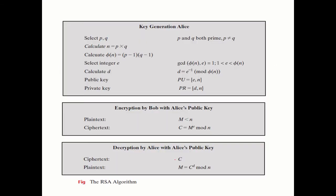For the calculation, we need two prime numbers P and Q. We calculate n = P × Q, then phi(n) = (P−1) × (Q−1). We choose E, which must be a prime number meeting two conditions using the GCD. We then calculate D, which must satisfy a specific equation.